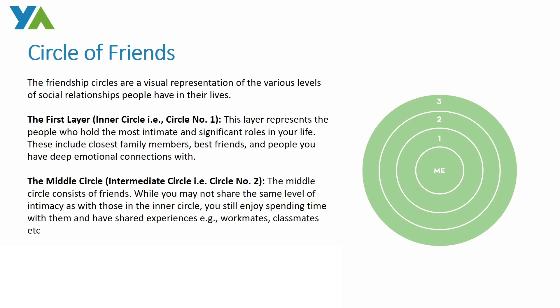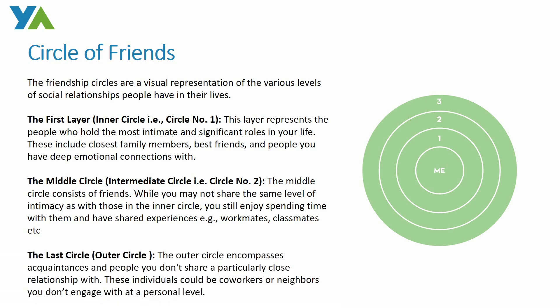Moving on to the last layer, the third outer layer comprises of people you barely talk to. These people may include your neighbors, your workmates, your classmates — those people you normally talk to here and there.